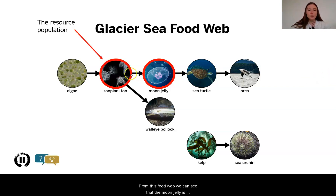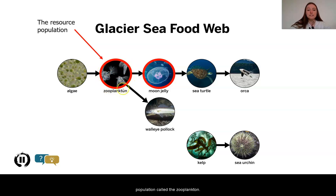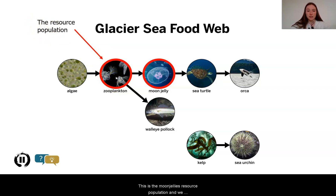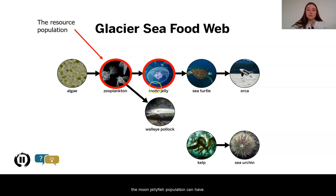From this food web, we can see that the moon jelly is receiving energy storage molecules from this population called the zooplankton. This is the moon jelly's resource population, and we know that this has an effect on the number of births that the moon jelly population can have.